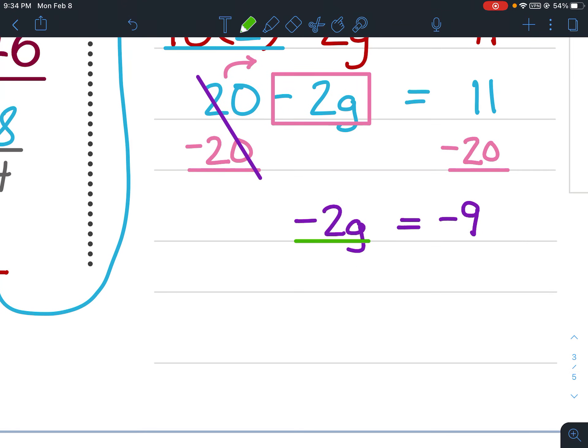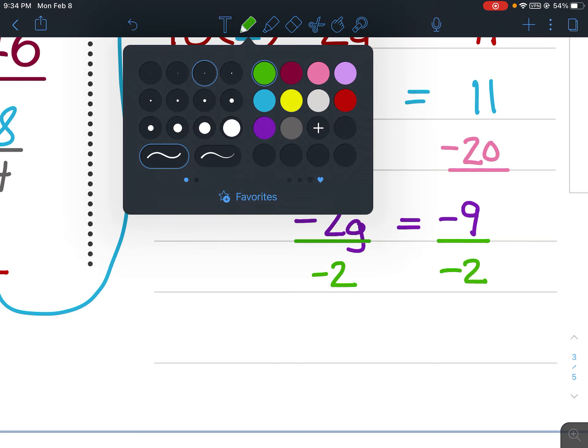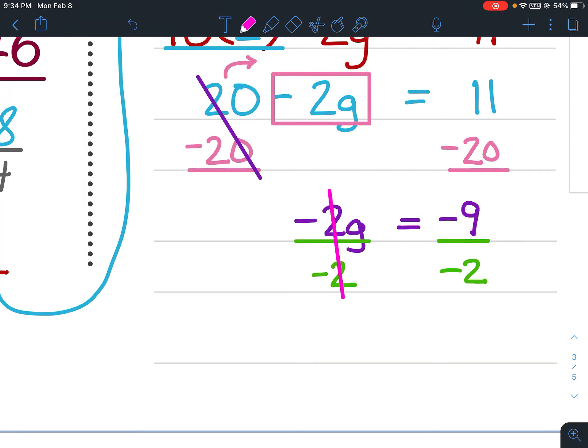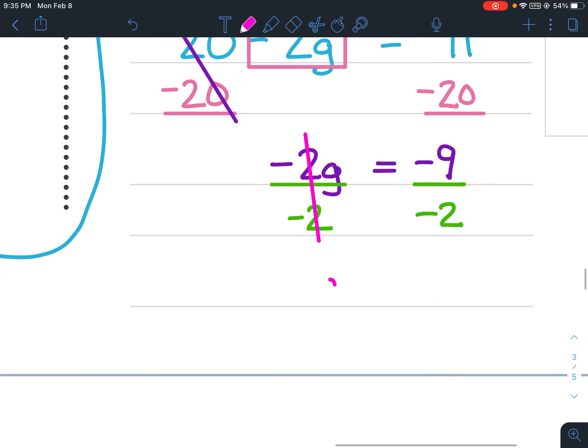To isolate the g, I'm going to divide both sides by negative 2. I'm going to eliminate my 2s. So g equals.